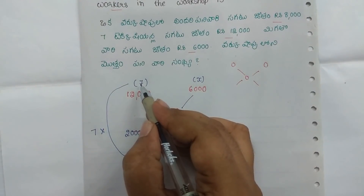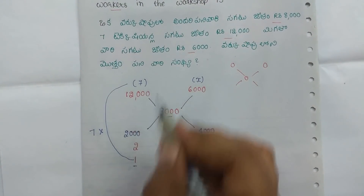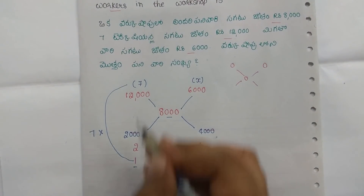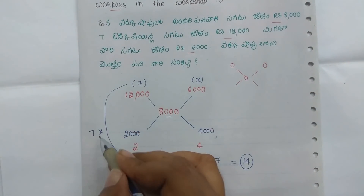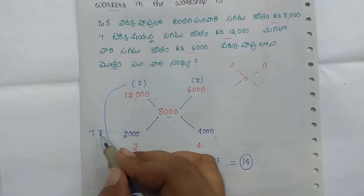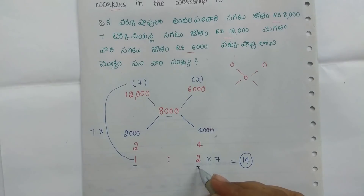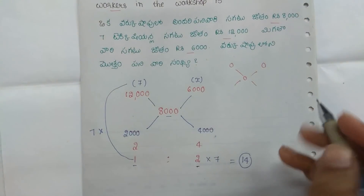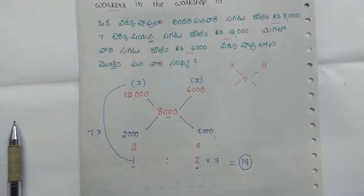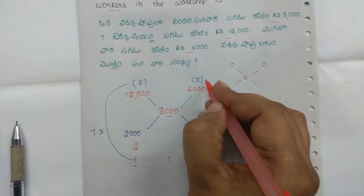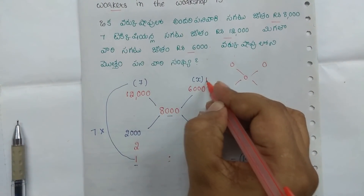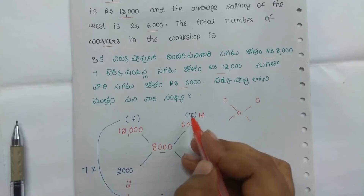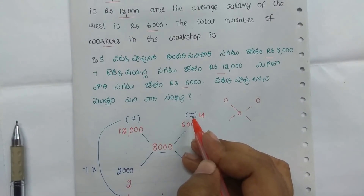So we got 7 technicians with ratio 1 here. Here is 7, and 2 here is 7, and here is x, so we have 14. And x is 14, but the question is not x.